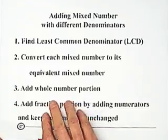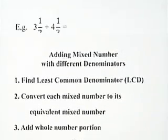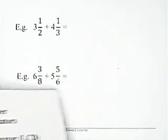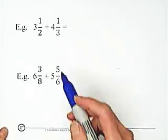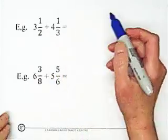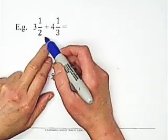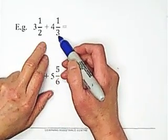Now I give you some examples. 3 and 1 over 2 plus 4 and 1 over 3. Find the least common denominator. 2 and 3, the least common denominator is 6.